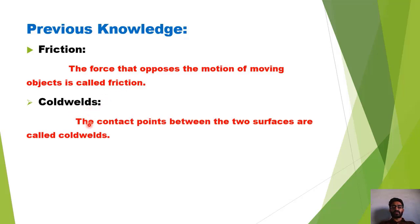Cold welds: the contact points between the two surfaces are called cold welds. جب کسی body کو کسی دوسری surface کی اوپر move کرواتے ہیں تو ان دونوں surfaces کے کچھ points آپس میں contact میں ہوتے ہیں۔ ان surfaces کے جو points آپس میں contact میں ہوتے ہیں ان points کو نام دیتے ہیں cold welds کا۔